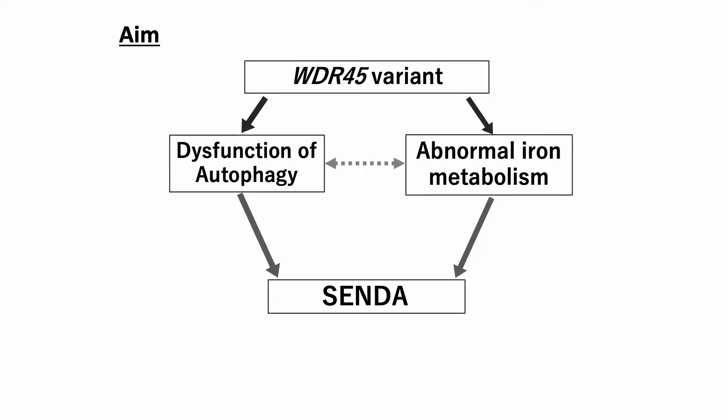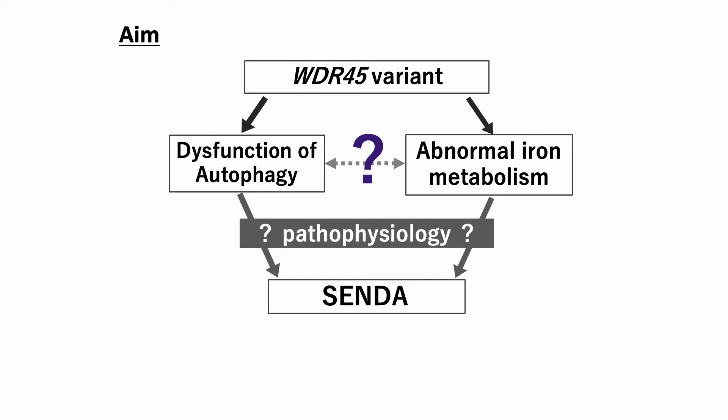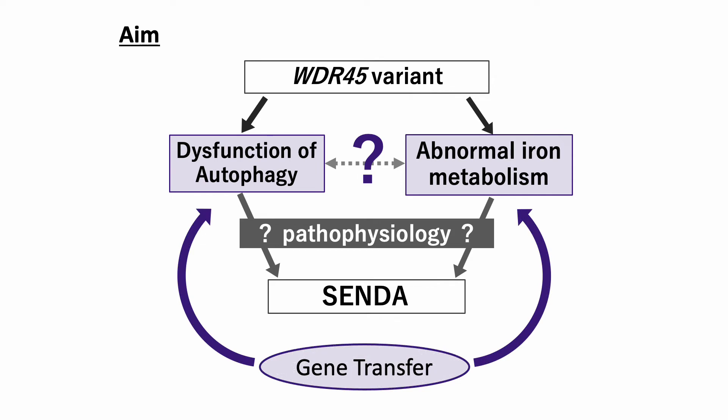WDR45 is an important gene for autophagy, and BPAN patients show iron deposition in the brain. However, it is unclear how autophagy dysfunction is related to abnormal iron metabolism, and the pathophysiology of BPAN is unknown. In this study, we evaluated autophagy activity, iron metabolism, and the molecules involved in iron homeostasis using fibroblasts derived from healthy participants and BPAN patients. We aimed to elucidate distinct mechanisms involved in the dysregulation of intracellular iron homeostasis of BPAN. Additionally, we aimed to restore the phenotypes via WDR45 gene transfer.